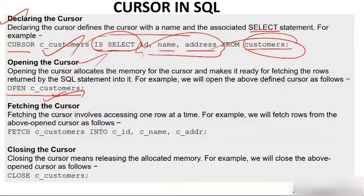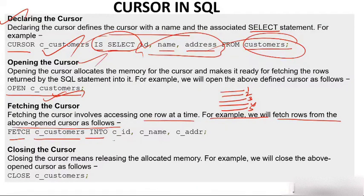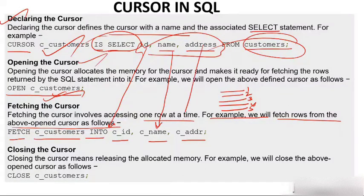Fetching the cursor involves accessing one row at a time. Suppose a table has five rows — you access them one at a time: first, second, third, fourth, fifth. We fetch rows of the opened cursor as: FETCH c_customer INTO cid, cname, c_address. What happens is: id comes into cid, name comes into cname, and address comes into c_address.